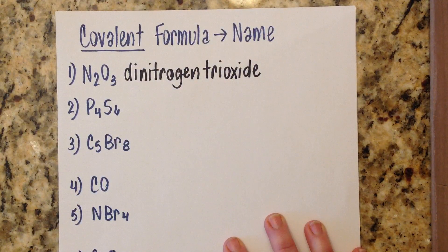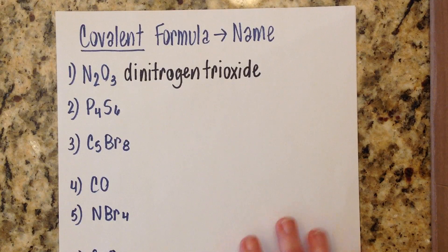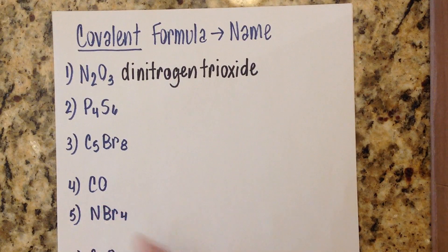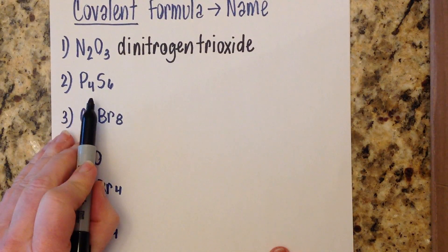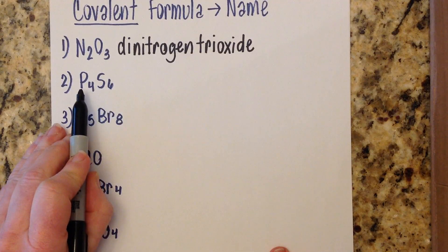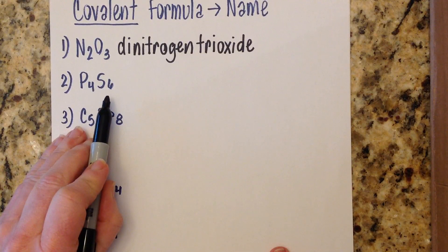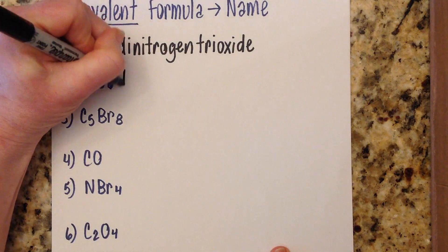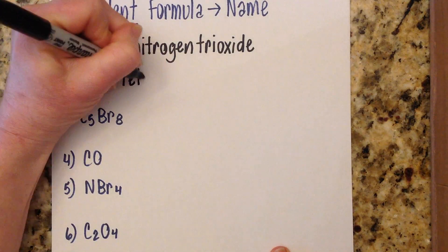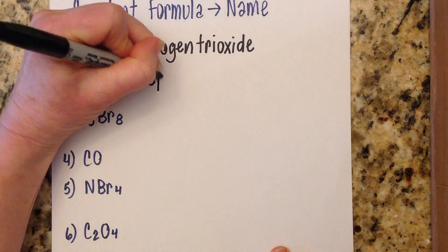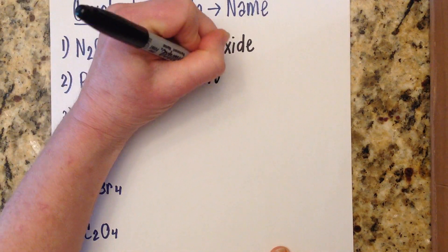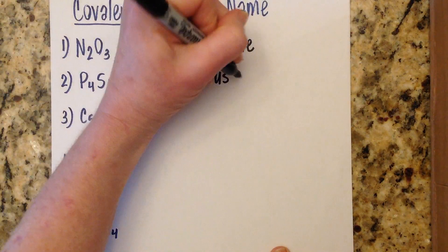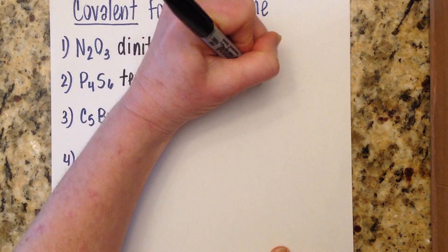After you write that out, it really makes you grateful for chemical formulas — they make your life easier, not harder. Number two: tetra-phosphorus hexasulfide. Tetra means four phosphorus atoms, hexa means six sulfur atoms. Tetraphosphorus hexasulfide.